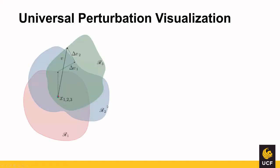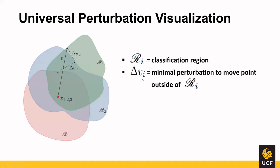To visualize this, R_i is the classification region, v_i is the minimal perturbation vector to move outside the classification region, and v is the universal perturbation vector. It starts at zero, and as the algorithm iterates, it adds delta v's so that the universal perturbation vector pushes these points outside of their classification regions.